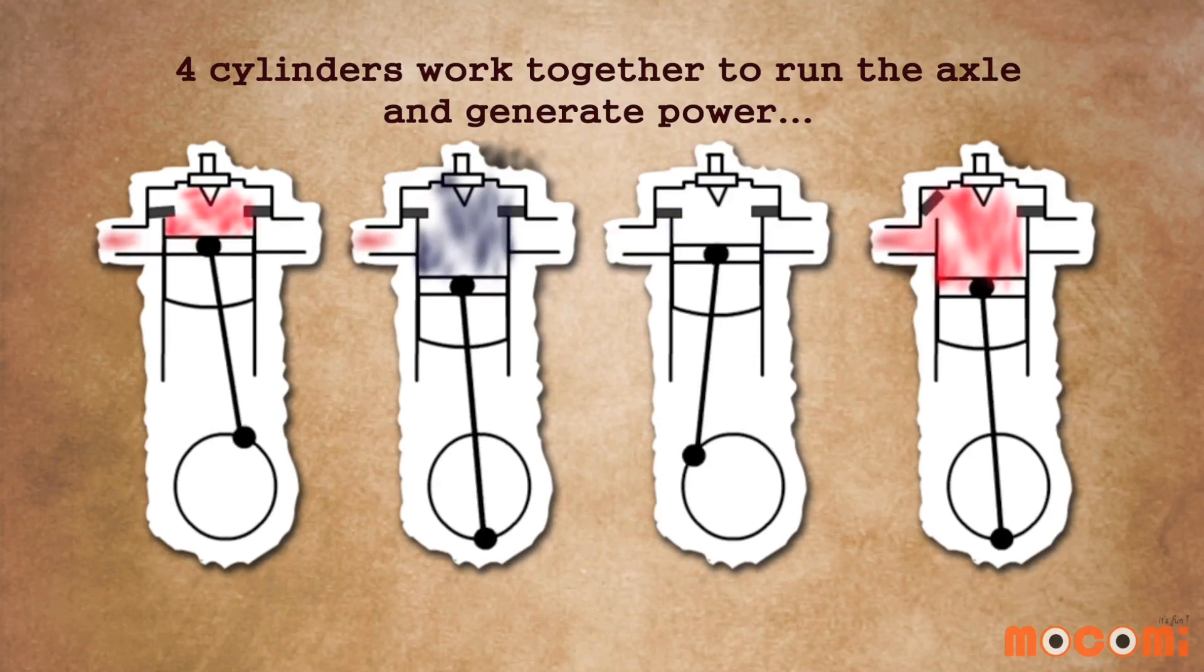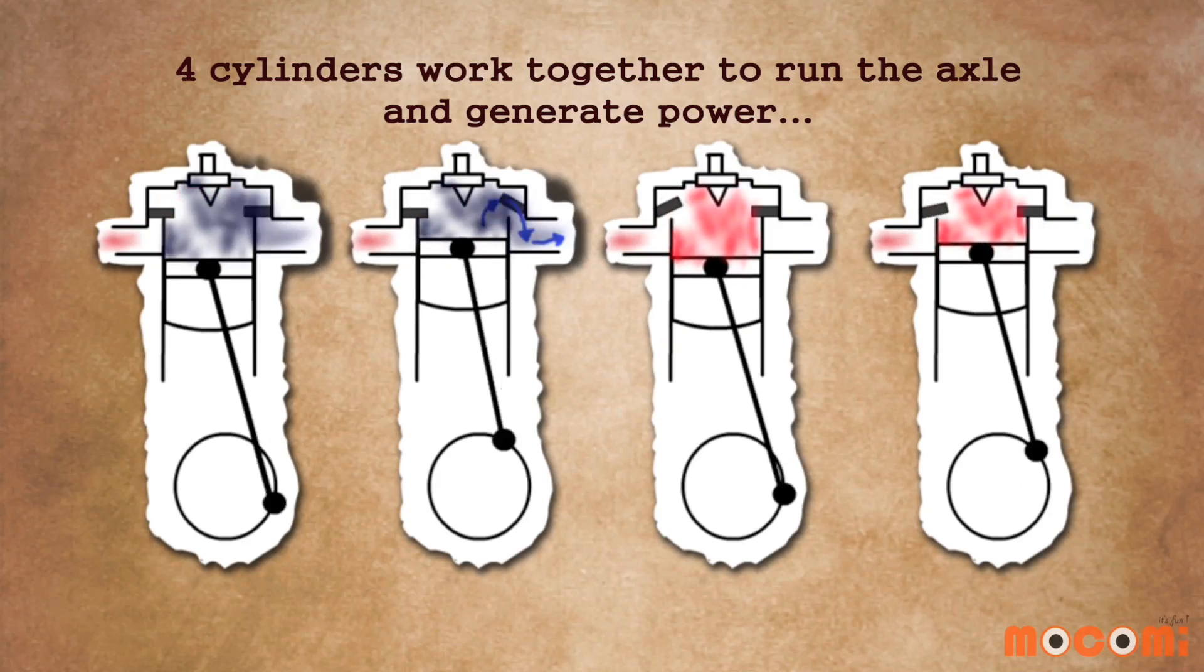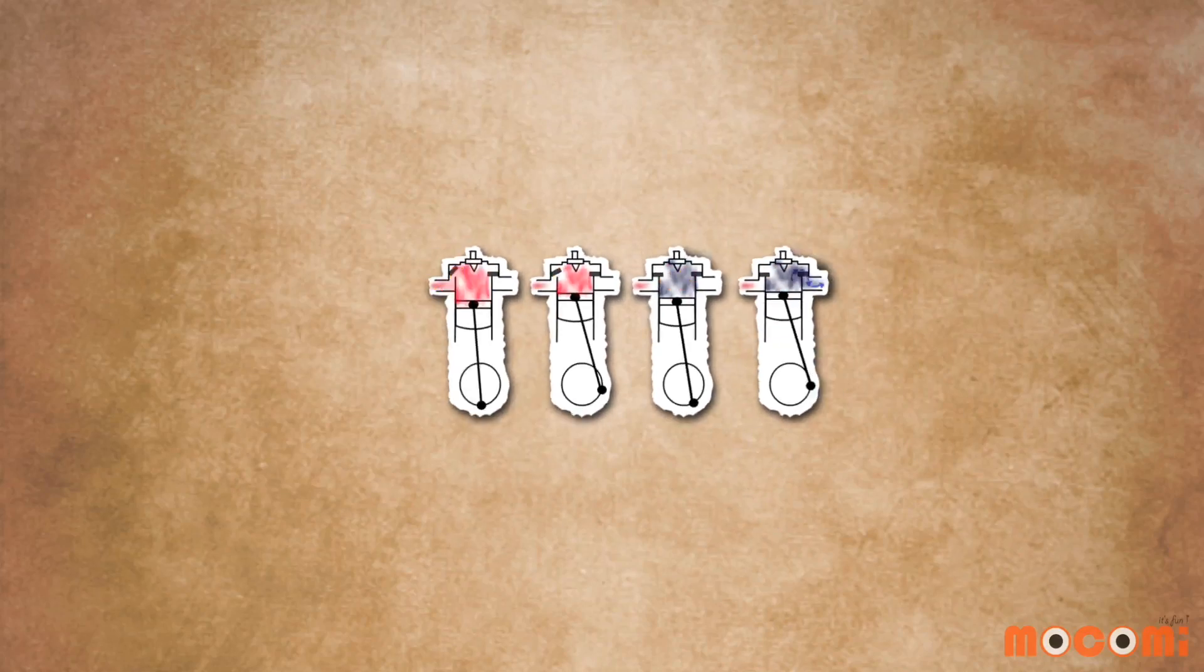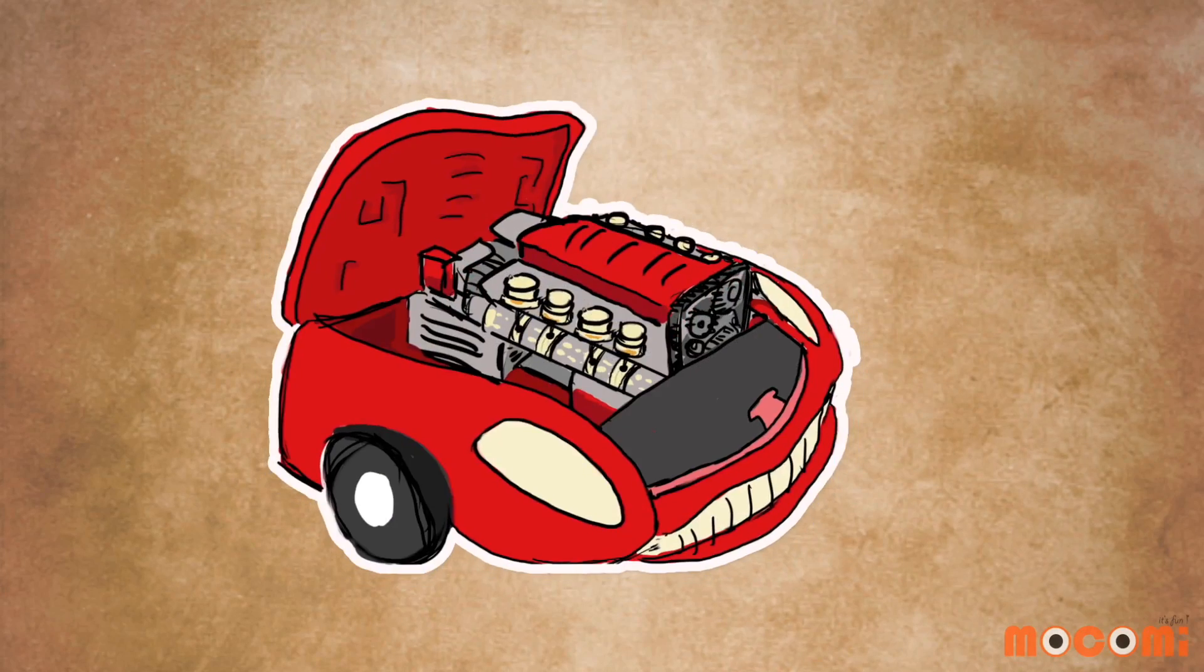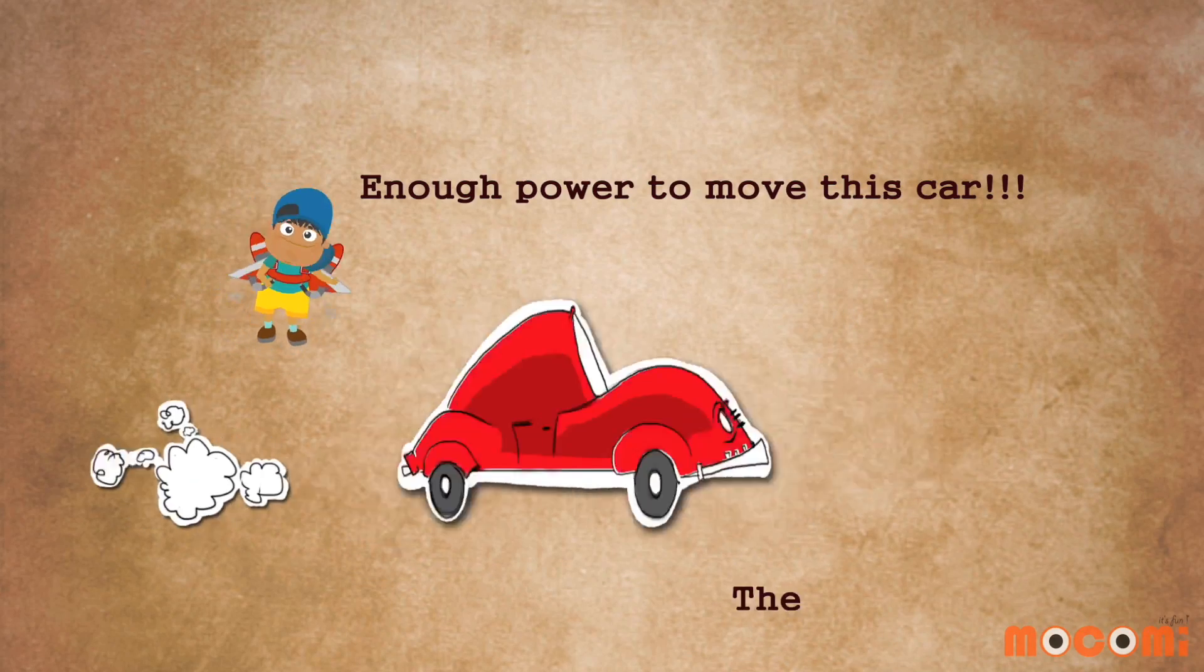Four cylinders work together to run the axle and generate power. Enough power to move the car.